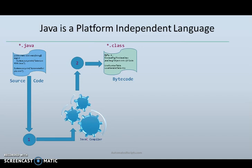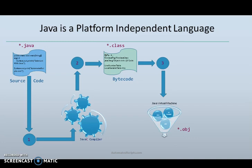A class file contains bytecode that can be executed by the Java Virtual Machine. The JVM can be downloaded for every major operating system including Windows, Mac OS, and Linux. The Java bytecode is not completely compiled but rather just an intermediate code, because it still has to be interpreted and executed by the JVM installed on the specific platform such as Windows, Mac, or Linux.